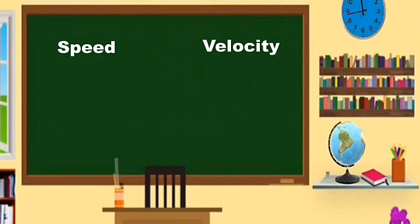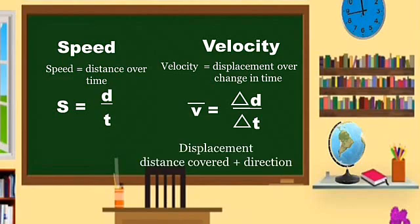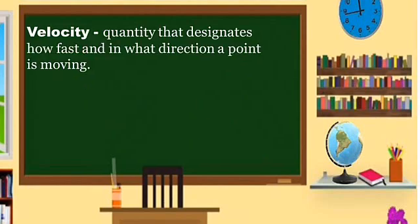When we're talking about speed, it is distance over time, while velocity is displacement over change in time. Displacement means distance covered plus the direction. So when we're talking about speed, we're just talking about the distance. But when it comes to velocity, it involves distance covered plus direction. Velocity is the quantity that designates how fast and what direction a point is moving.